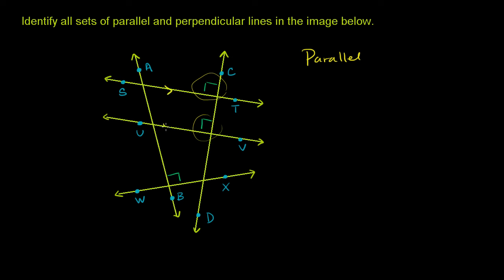So line ST is parallel to line UV. And we can write it like this. Line ST, we put the arrows on each end of that top bar to say that this is a line, not just a line segment. Line ST is parallel to line UV. And I think that's the only set of parallel lines in this diagram.